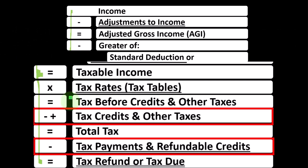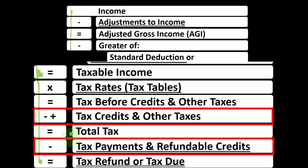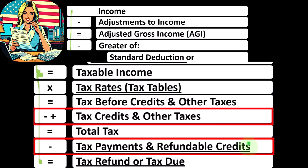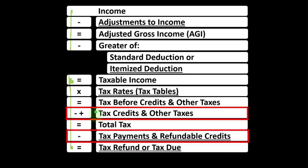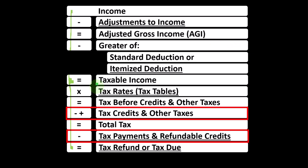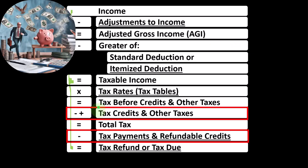Once we calculate the tax before credits and other taxes, then we have to deal with the credits — our point of focus now — and other taxes and the payments. Note that we have two line items for credits: credits up top in the same category as other taxes, and credits down below in the same category as payments, because other taxes like self-employment tax increase liability, and credits would decrease it.